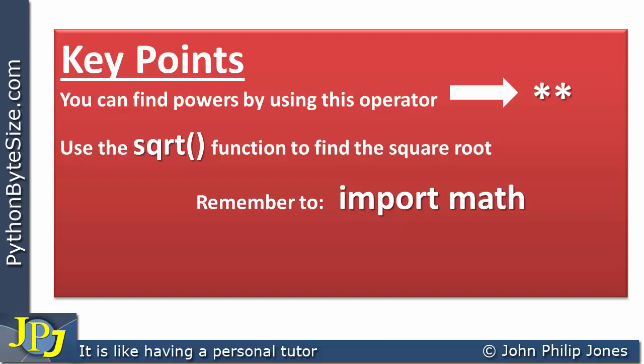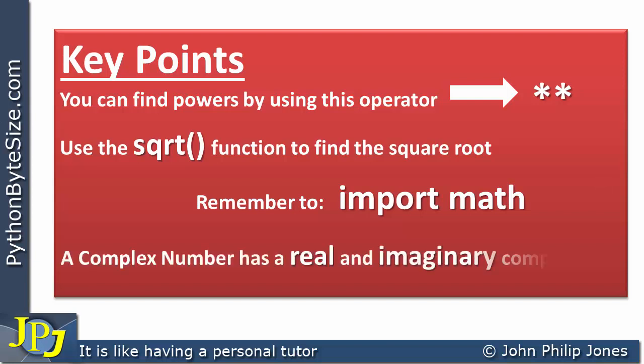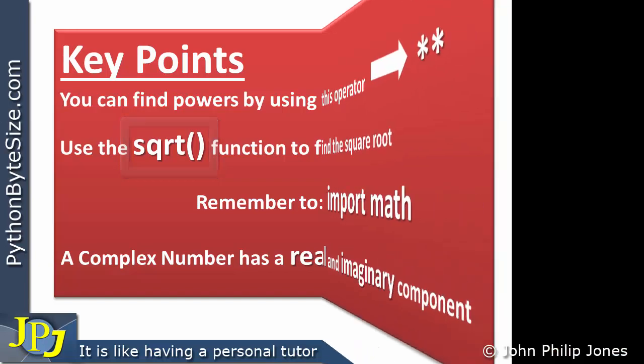We have also reviewed in this tutorial that a complex number has a real and an imaginary component. Before finishing, here is a question to consider: what would the square root function do if you passed it a complex number — not a float or an integer, but a complex number? What do you think it would do?